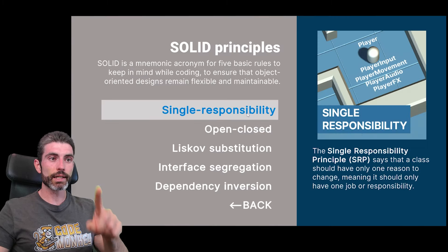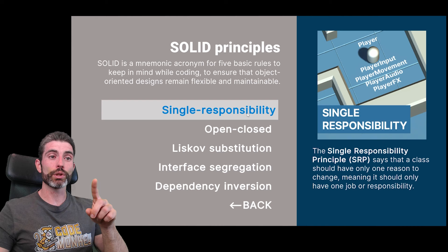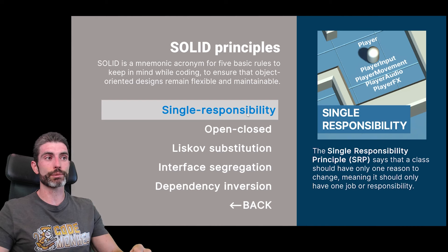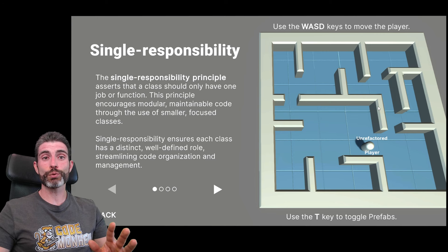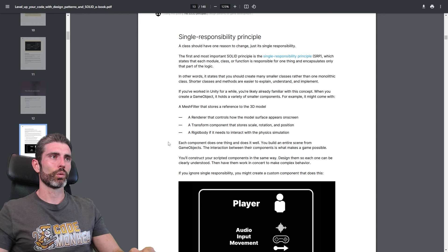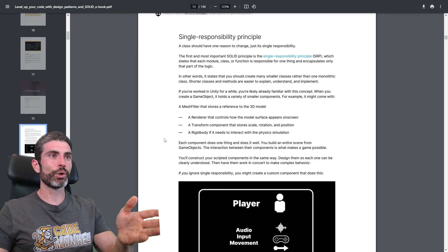This one says that a class should have only one reason to change, meaning it should only have one job or responsibility. If you just follow this one very simple rule, your code will be so much better. We can read in the ebook some more detail about this principle.